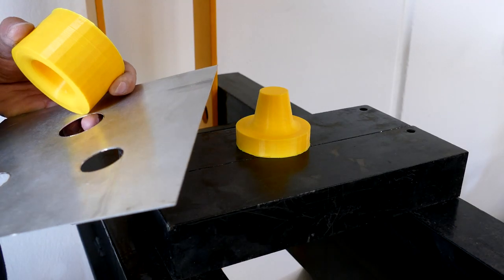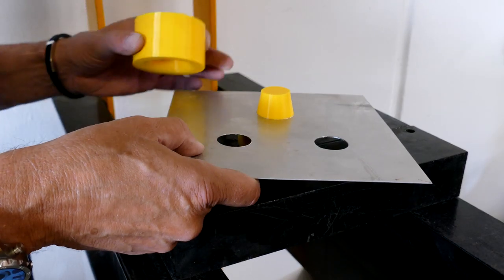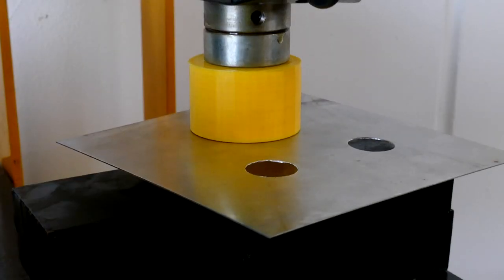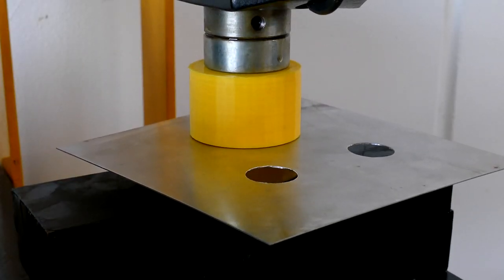The sheet metal is placed on the punch in a press. The counterpart is put on. Now the entire package is put under pressure.